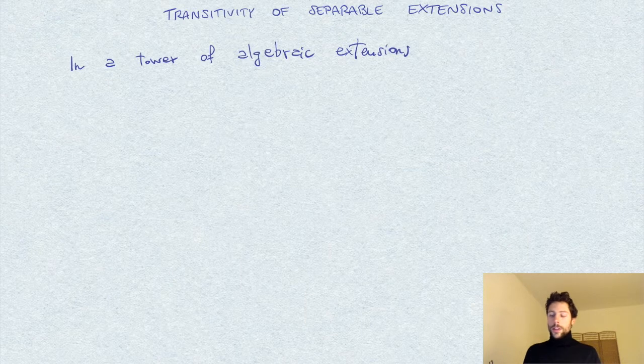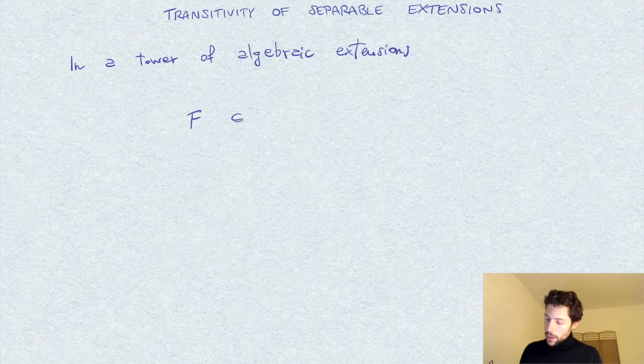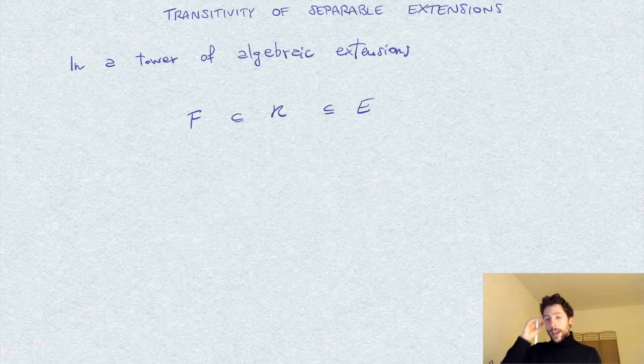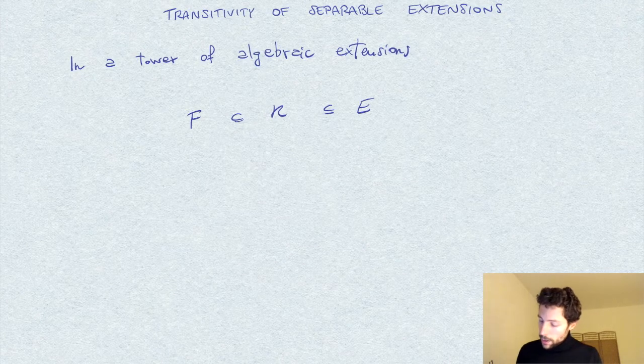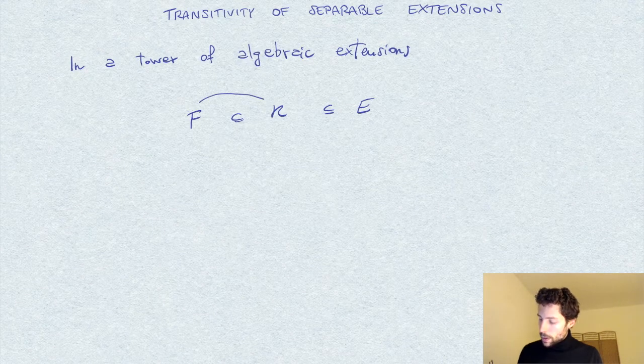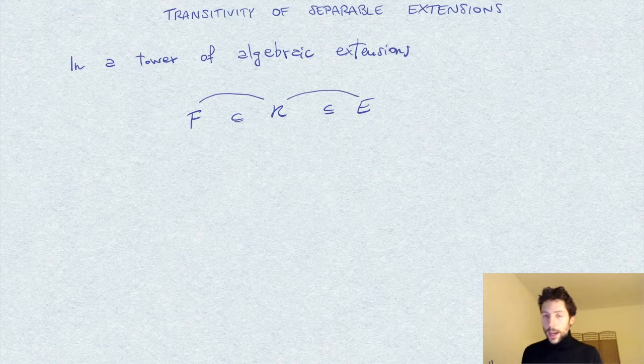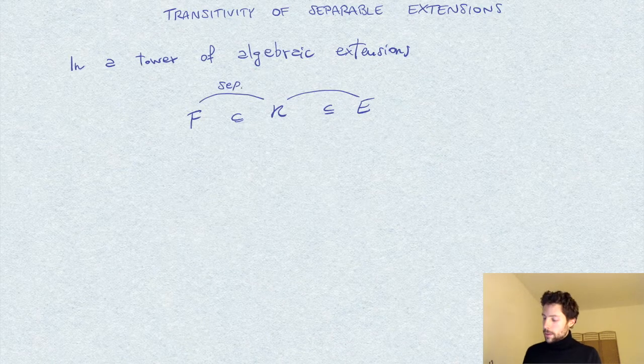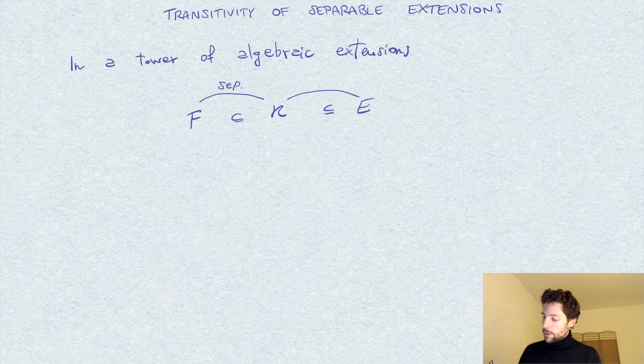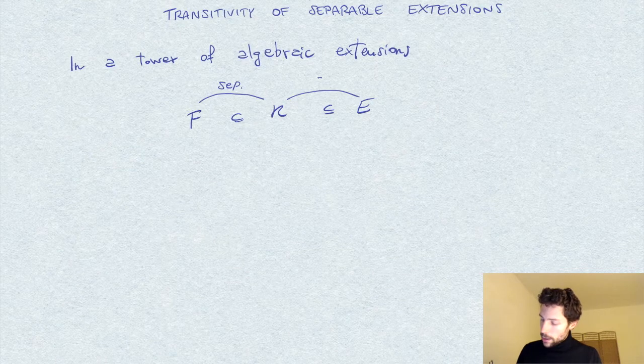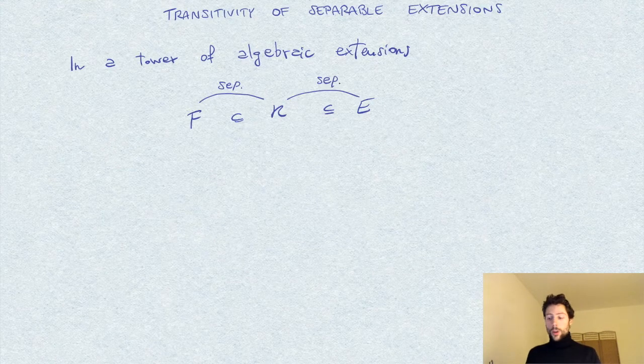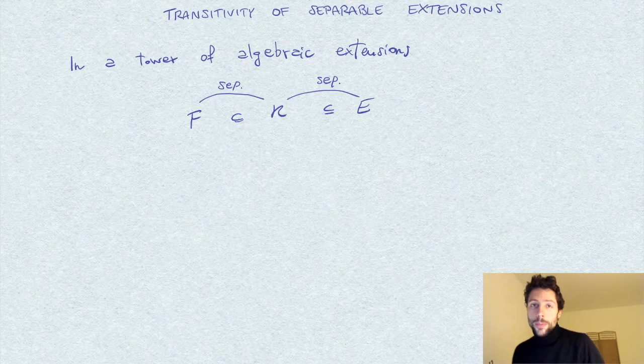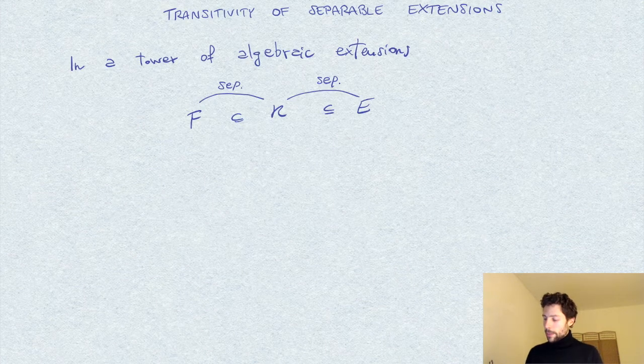Say we have F field inside K inside E. We know that these intermediate extensions are separable. So all elements in K are separable over F, and all elements in E are separable over K, meaning that their respective minimal polynomial is a separable polynomial for all elements.